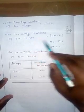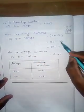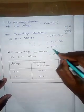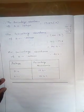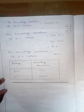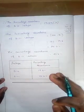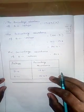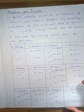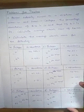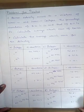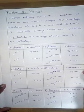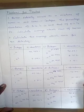Now to find the percentage abundance of B-11, which we defined as 100 minus x. Substituting x = 19.6: 100 minus 19.6 = 80.4%. So the percentage abundance of B-11 is 80.4%. It's a very simple idea. Please practice — it will make your study easier. Take a photograph of these sums so you can work them out and master this area. I hope everyone understood. Thank you so much.